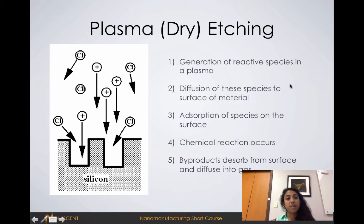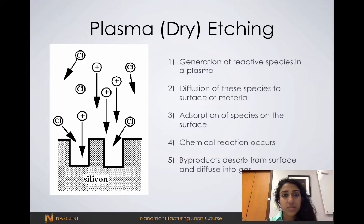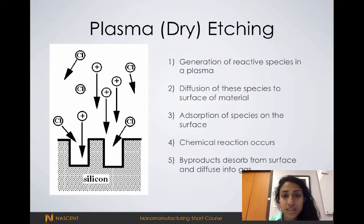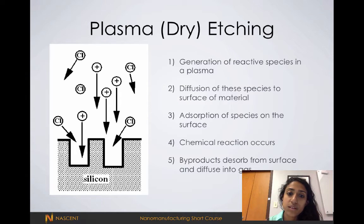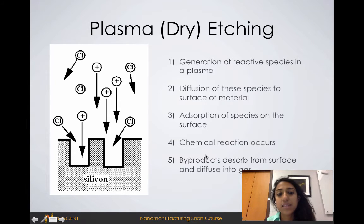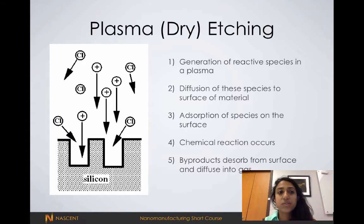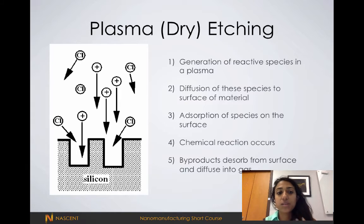Or maybe you'll get undercutting depending on the chemical reactions happening or if the etch recipe is isotropic or anisotropic. In plasma etching, also called dry etching, plasma is an ionized gas, and a power source is used to generate a reactive species inside the plasma. These species usually diffuse to the surface of the material, absorb to the surface of whatever you're trying to etch, and a chemical reaction occurs. The byproducts desorb from the surface and diffuse away into the gas.